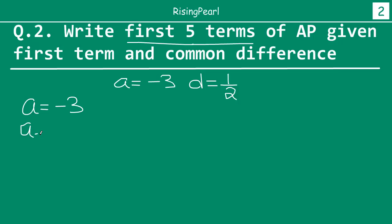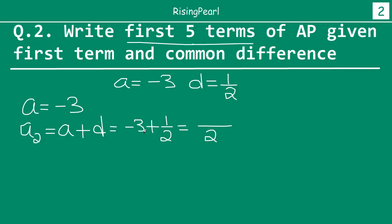The second term A₂ is going to be first term plus common difference. So the first term is minus 3 plus common difference is 1/2. If we solve this, we will get 2 as our denominator. So 2 times 3 is minus 6, plus 1 — so this will be minus 5/2. So this is our second term.